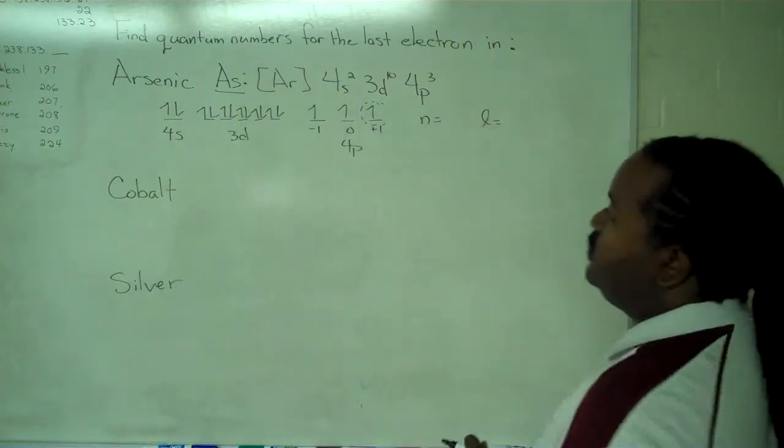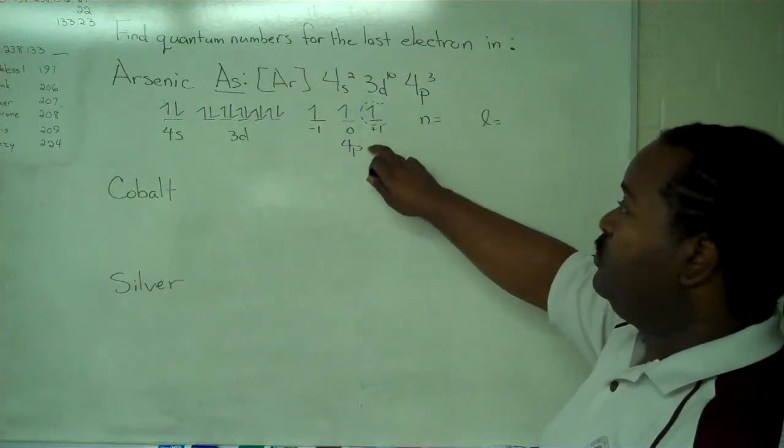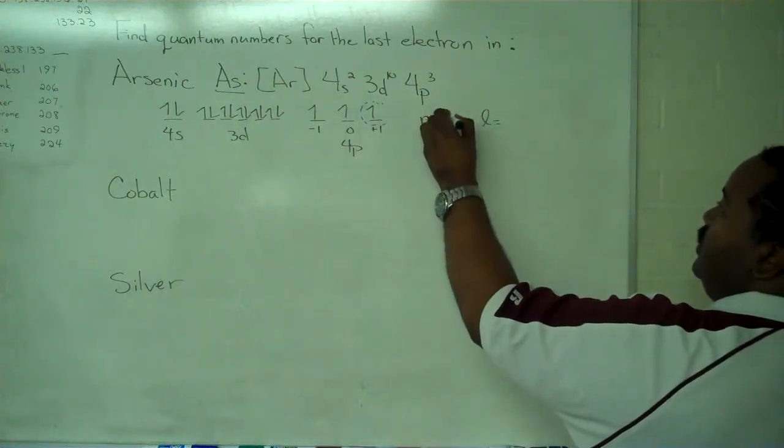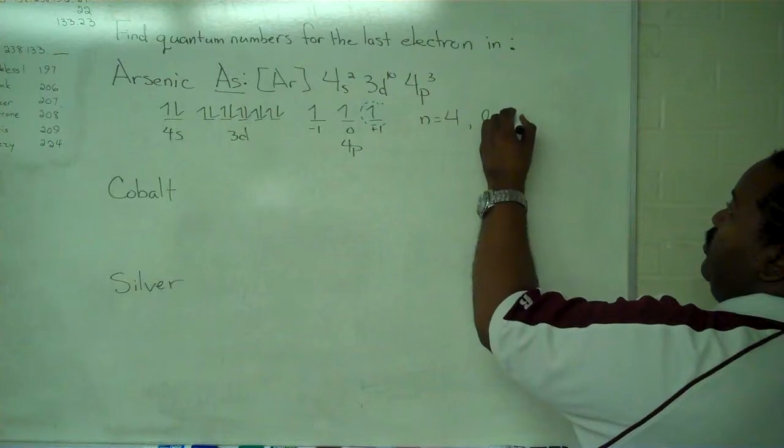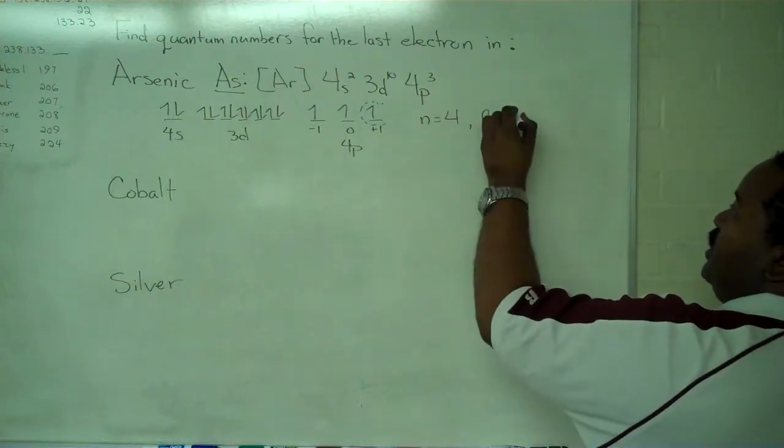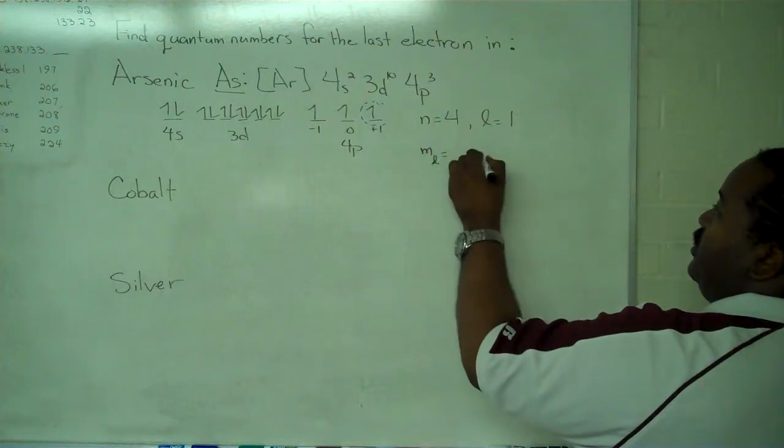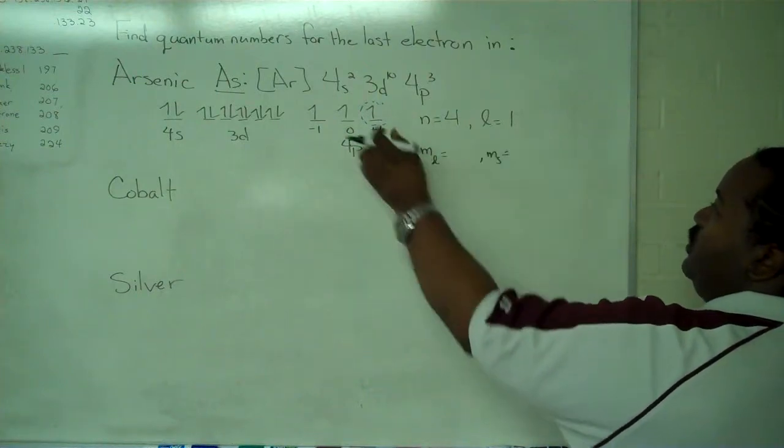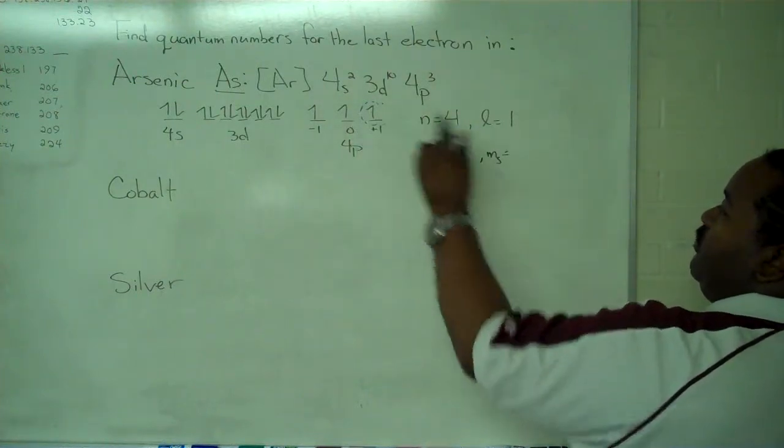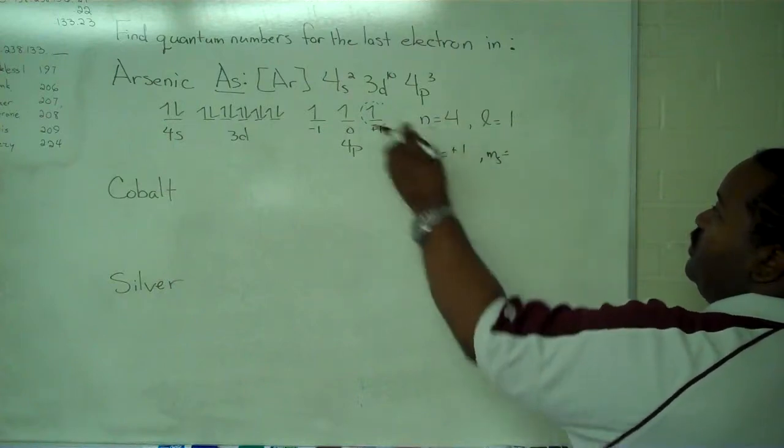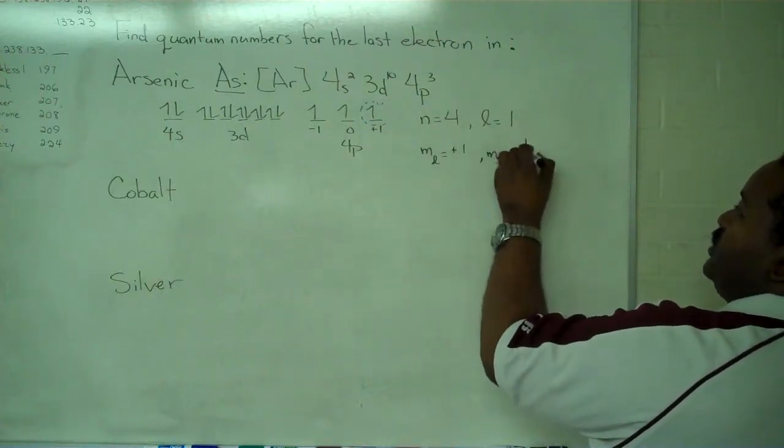That's 4p, so n equals 4, and because it's p type, l equals 1. And then our magnetic and spin numbers come from here. Here, we have a plus 1 for m_l, and because it's spin up, that's plus 1/2.